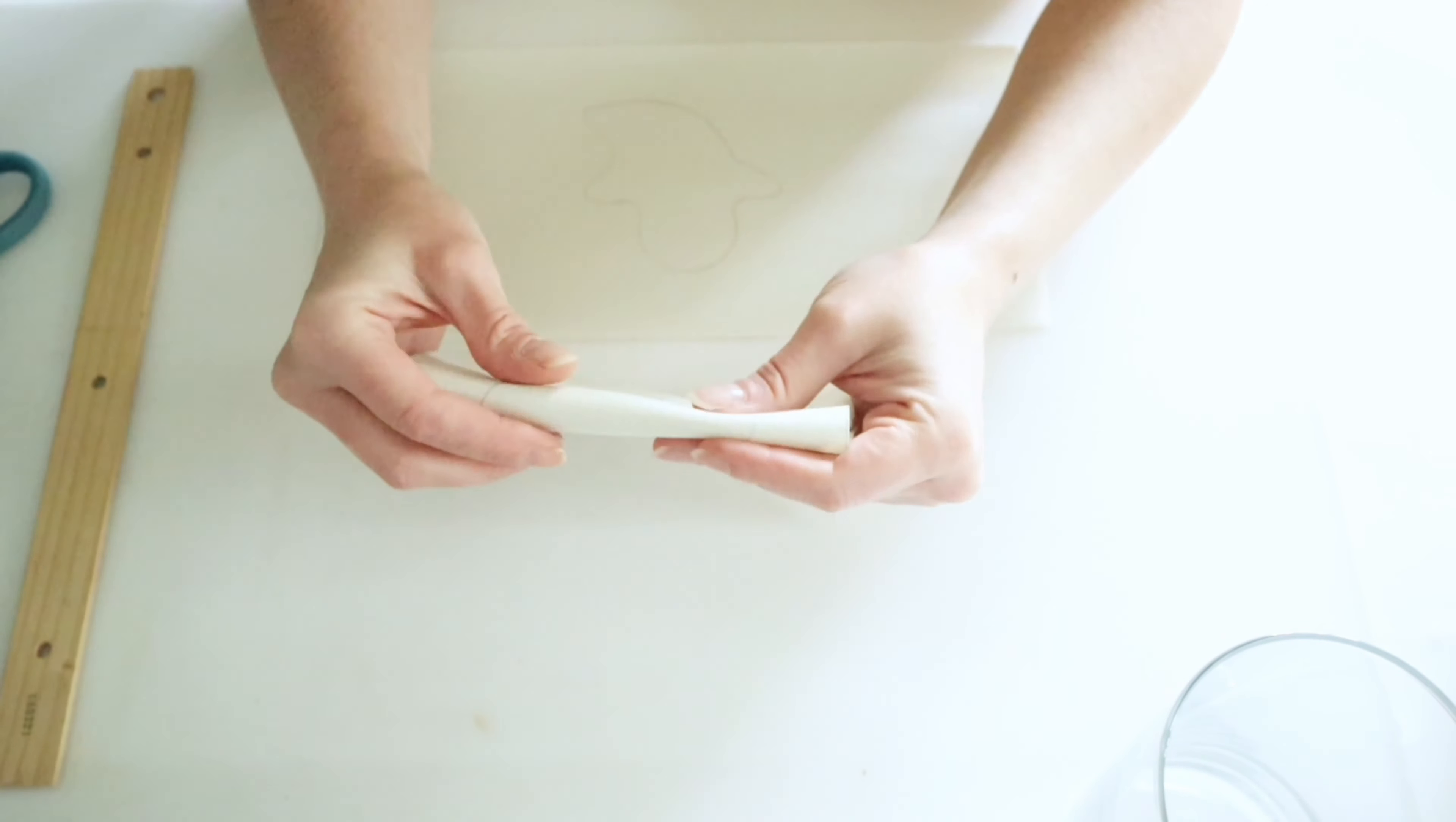Then I'm going to go ahead and fold this in half and I'm going to take my scissors and make a very small cut, just enough so that I can get my scissors in between there and cut out the ghost without cutting the edges of the leather.